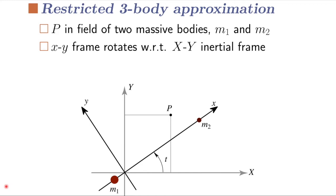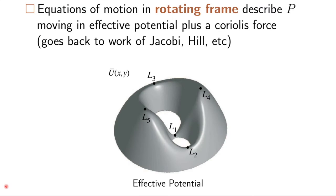So let's review quickly the restricted three-body approximation. There's a test particle P in the field of two massive bodies, M1 and M2. And we usually consider this not in an inertial frame, but in a rotating frame, where the small x-axis goes from M1 to M2. So we're looking at the motion of the test particle in this co-rotating frame.